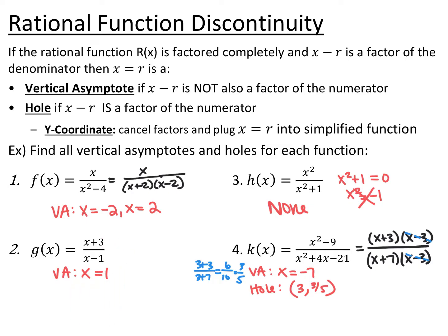For number 3, h(x), if I set the denominator equal to zero, there are no real values that make the denominator zero. So there are no domain issues, and therefore no discontinuity—no vertical asymptotes or holes.